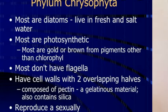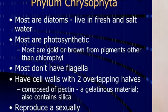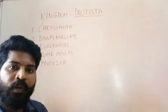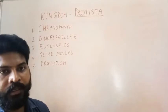Diatoms prepare food for all organisms and can be found floating on the surface of water — we call them planktons. Their color is golden or brown, and flagella are mostly absent. The unique feature of Chrysophyta is that their body is in the form of a soap box — two cup-shaped halves that fit into each other.